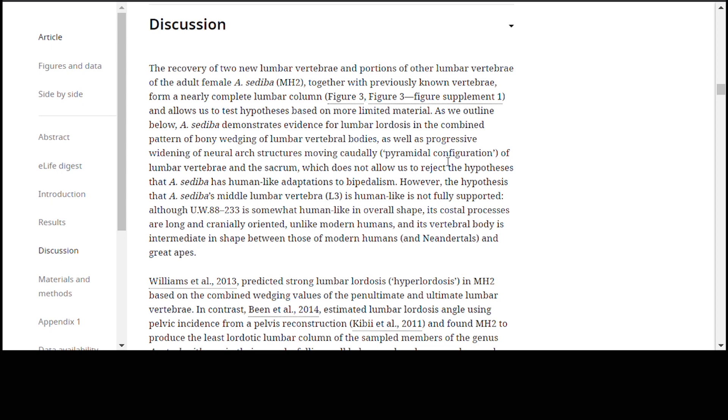Australopithecus sediba demonstrates evidence for lumbar lordosis in the combined pattern of bony wedging of lumbar vertebral bodies as well as progressive widening of neural arch structures moving caudally, pyramidal configuration of lumbar vertebrae in the sacrum, which does not allow us to reject the hypothesis that Australopithecus sediba has human-like adaptations to bipedalism.